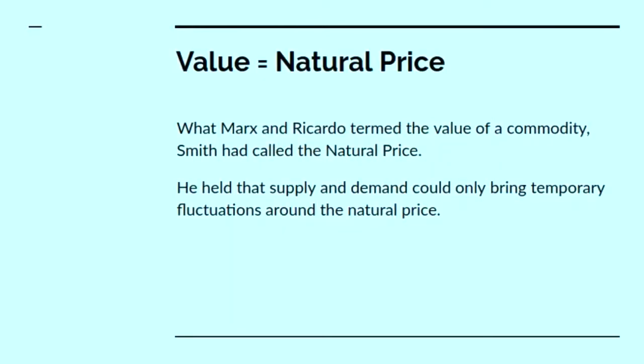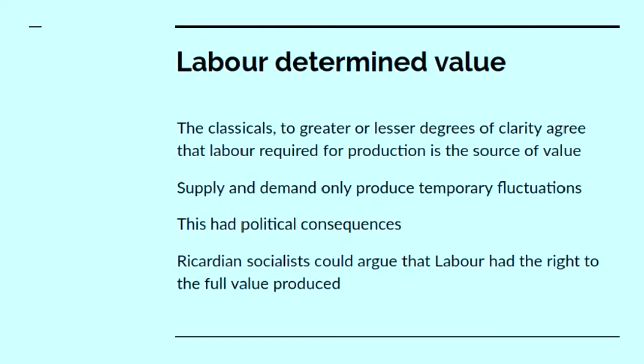He is using the word want in a slightly archaic 18th century use there. Now, you have to realize that in Smith the term natural price corresponds to what Ricardo and Marx called value. And Smith held that supply and demand could only bring temporary fluctuations around the natural price. All the classicals, to a greater or lesser extent of clarity, agree that the labour required for production is the source of value. Supply and demand only produce temporary fluctuations, and this had political consequences. If you accept that labour is the source of value, the Ricardian socialists could argue that labour had the right to the full value of product.